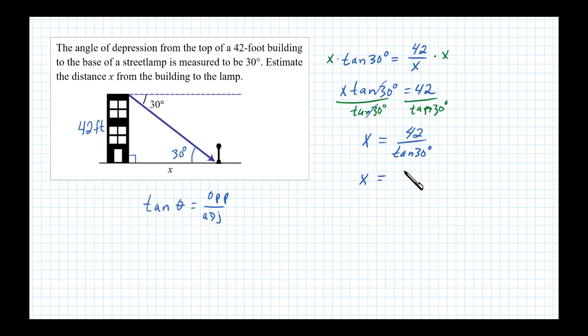Now I know tangent of 30 degrees is exactly equal to square root of 3 over 3. So that's equal to 42 times 3 over square root of 3. That's just the 42 times the reciprocal of the denominator. Now really quick I'll go ahead and rationalize this. x exactly equals 42 times the square root of 3, that's all the numerators there, divided by the square root of 9 which is just 3.